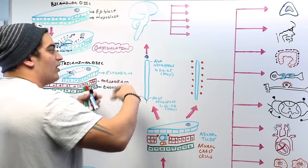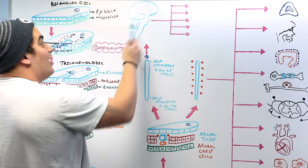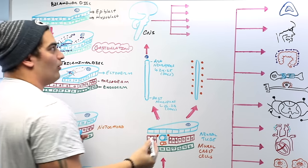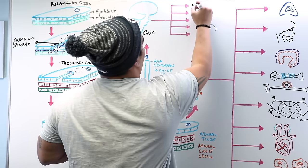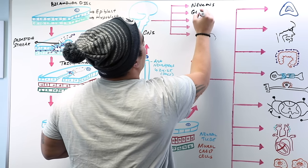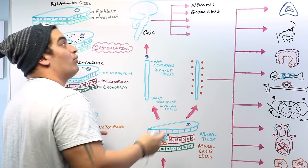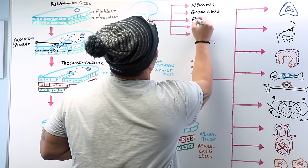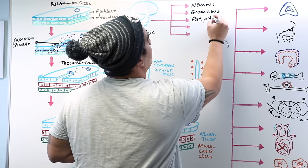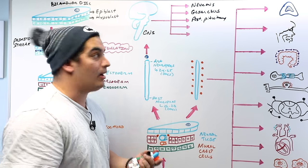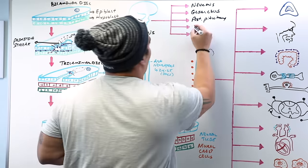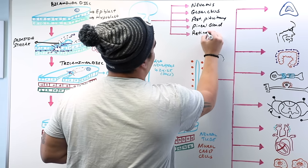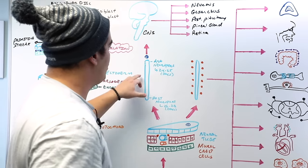The neural tube undergoes vesiculation and eventually becomes your central nervous system — the brain and spinal cord. What is the CNS made up of? Neurons, glial cells — primarily astrocytes and oligodendrocytes. Also consider the posterior pituitary, which comes off the hypothalamus, the pineal gland, and the retina — these are all part of the central nervous system and derivatives of the neural tube.